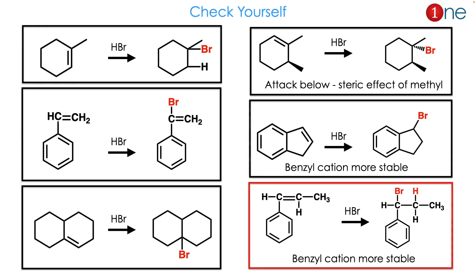Here are some examples to practice yourself — just choose the more substituted carbon and place bromine there. The last example is interesting because both carbons are equally substituted: one is with phenyl and one is with methyl. Phenyl cation is more stable than methyl, and you should remember that phenyl is more stable than tertiary.